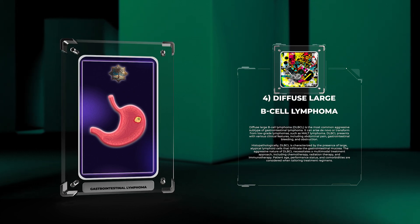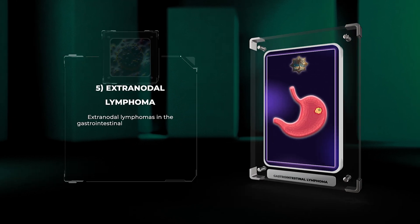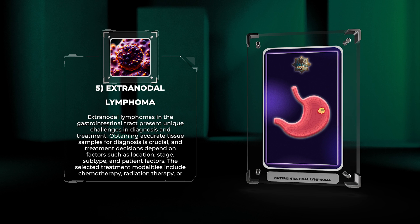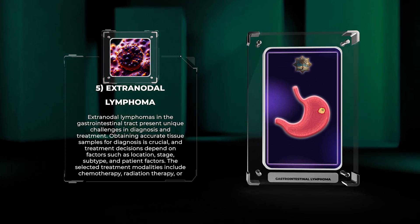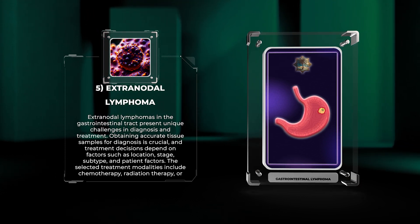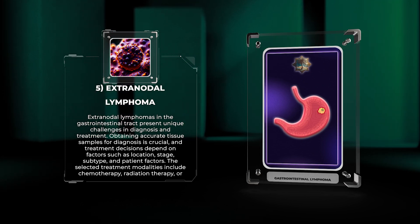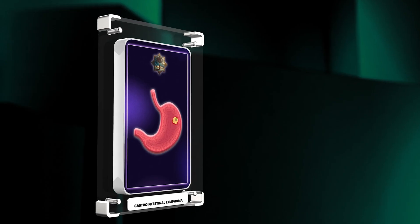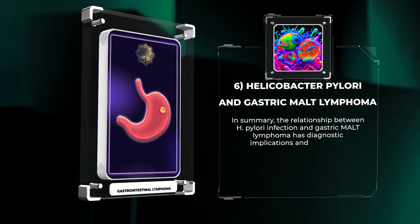Extranodal lymphomas in the gastrointestinal tract present unique challenges in diagnosis and treatment. Obtaining accurate tissue samples for diagnosis is crucial, and treatment decisions depend on factors such as location, stage, subtype, and patient factors. The selected treatment modalities include chemotherapy, radiation therapy, or surgery.